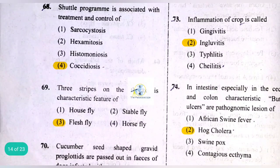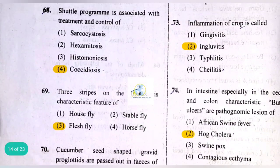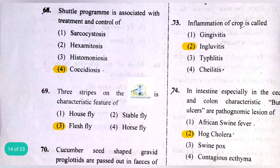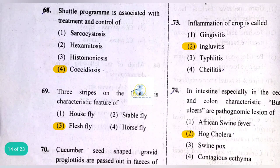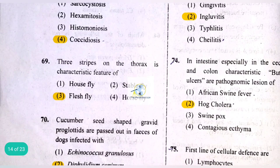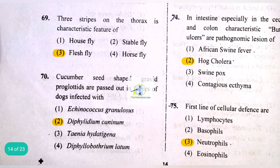Inflammation of the crop is called ingluvitis. People are often confused between typhlitis and ingluvitis, but the answer is ingluvitis. Cheilitis relates to the lips, while ingluvitis is inflammation of the crop. In poultry, inflammation especially in the caecum and colon should not be confused with ingluvitis.